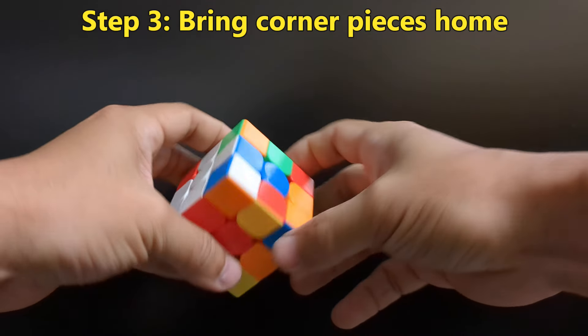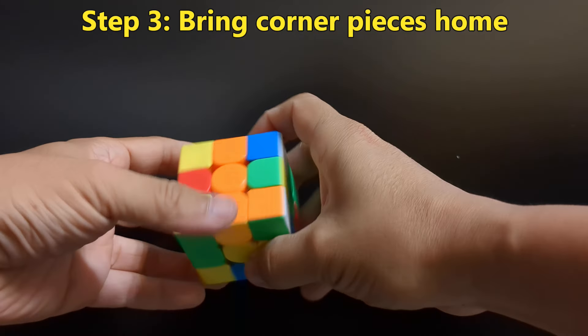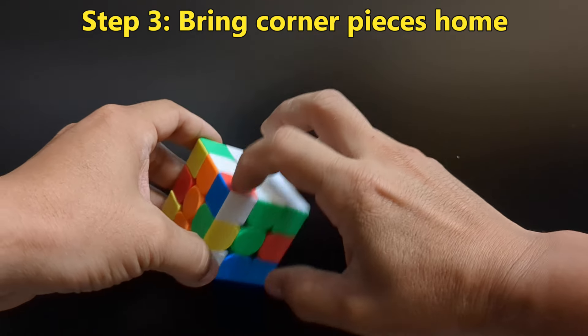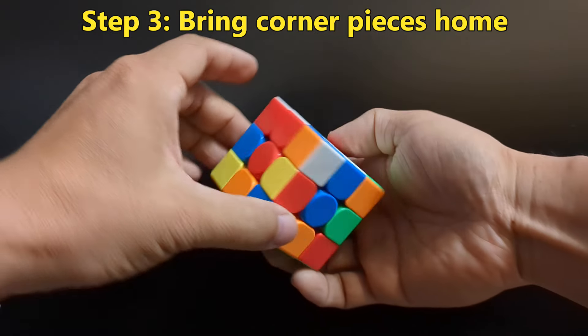All right, so we need white, blue, red. Red, white, and blue. Okay. Where's the red, white, and blue? Red, white, and blue. That guy. Okay. Red, white, and blue needs to be over here.